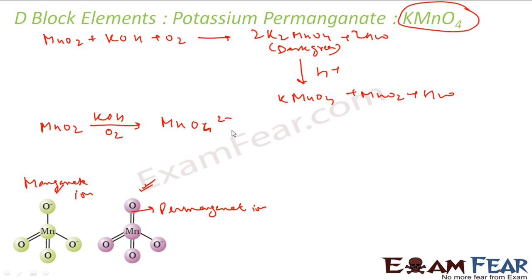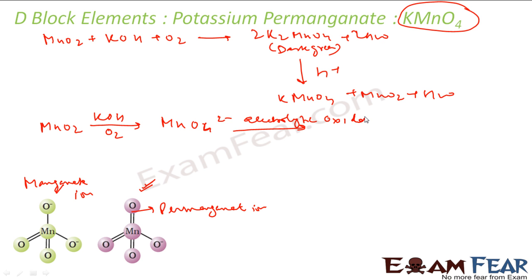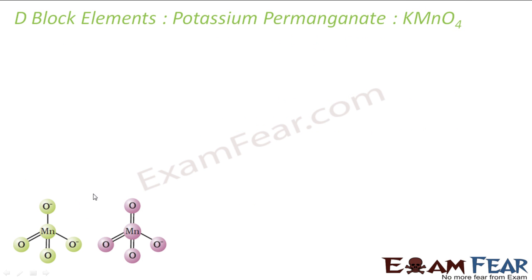Once you have MnO₄²⁻ (manganate), you do electrolytic oxidation in alkaline solution. This gives MnO₄⁻, the permanganate ion. MnO₄²⁻ (manganate) is dark green in color, and MnO₄⁻ (permanganate) is dark purple in color. Both manganate and permanganate ions are tetrahedral in structure.